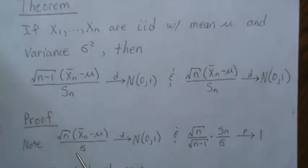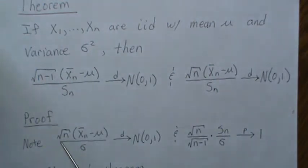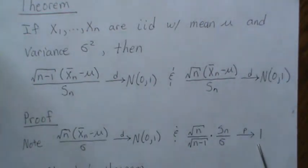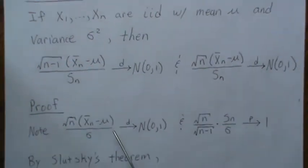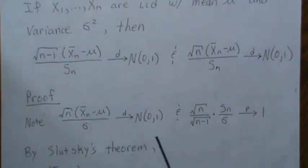By the central limit theorem, (X̄ − μ)/(σ/√n) converges in distribution to the standard normal. We also just showed that Sn/σ converges in probability to 1, which is a constant not equal to zero. So by Slutsky's theorem, dividing the CLT quantity by this ratio converges in distribution to standard normal divided by 1, which is just standard normal.